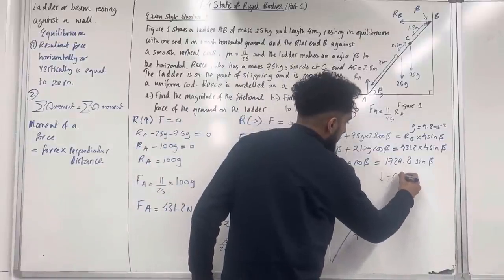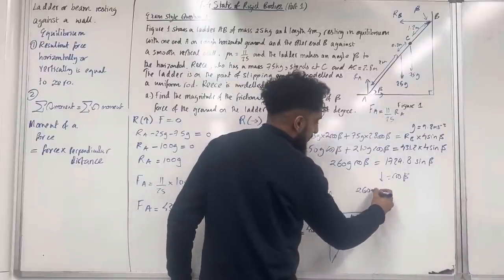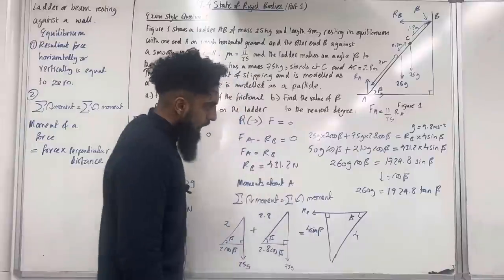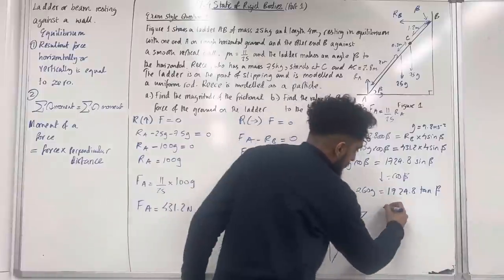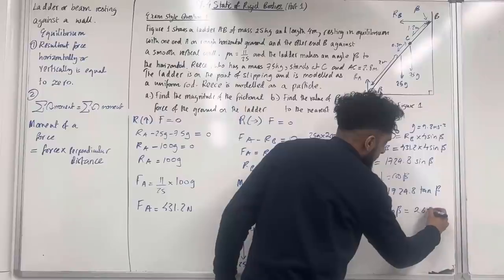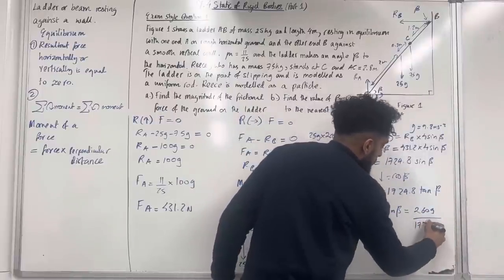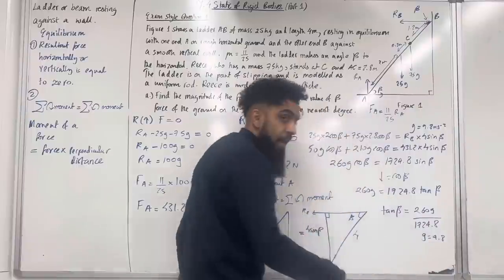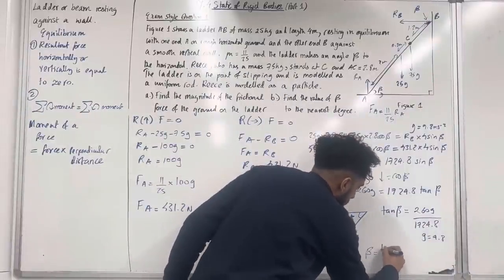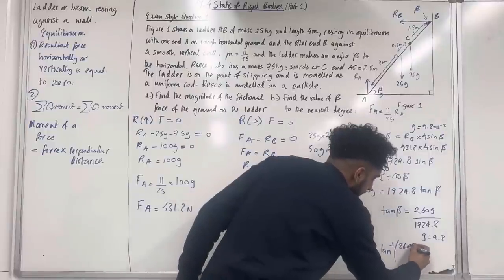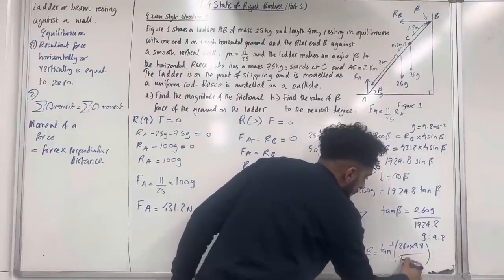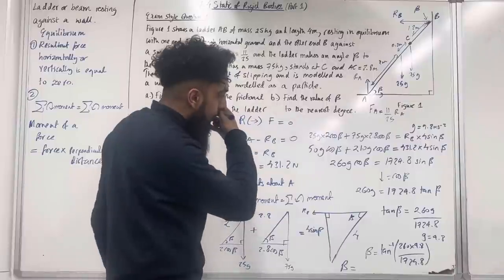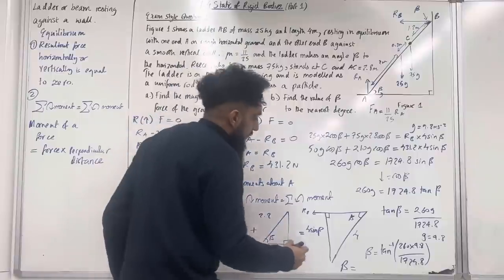Making tan β the subject: tan β = 260g / 1724.8. Substituting g = 9.8: β = tan⁻¹(260 × 9.8 / 1724.8). Putting this into the calculator and rounding to the nearest degree gives β = 56°. That completes part B and exam style question 1.